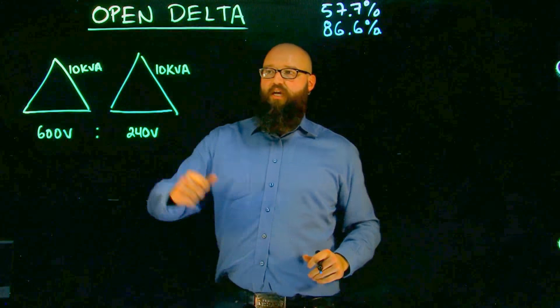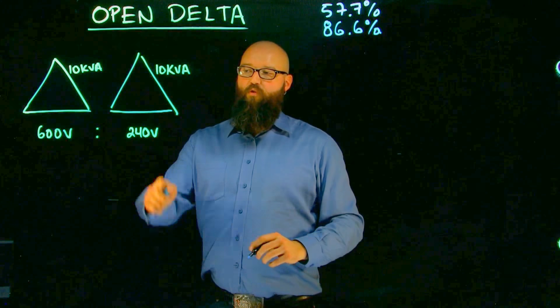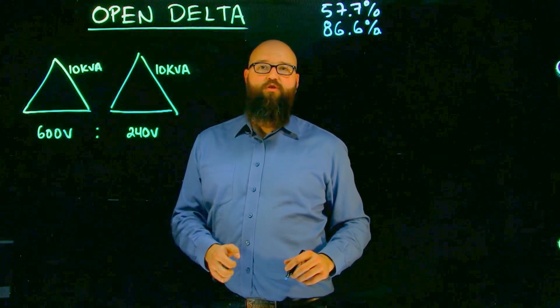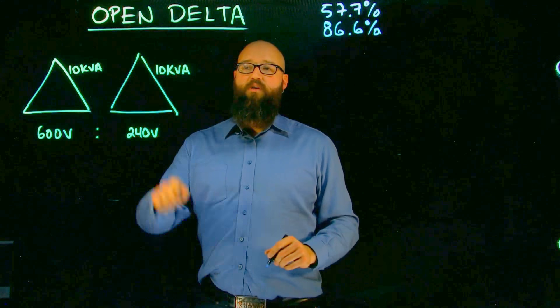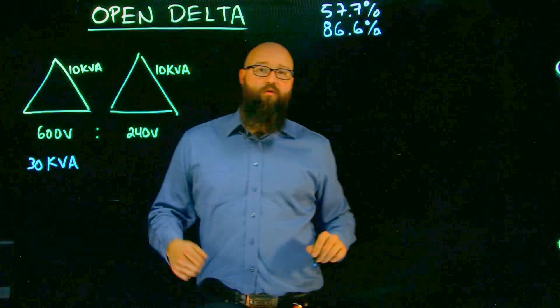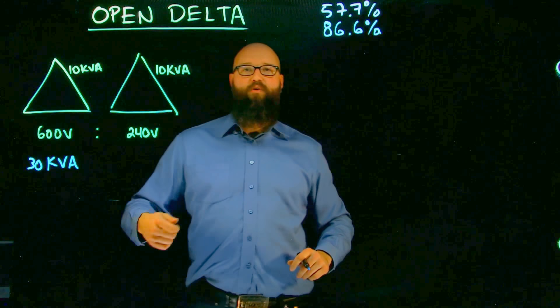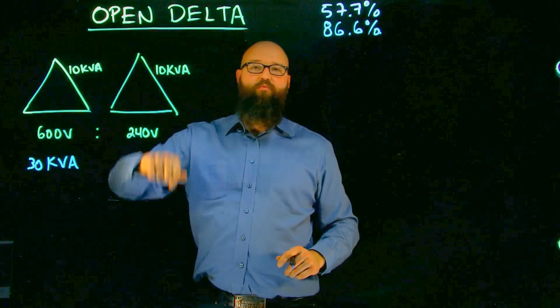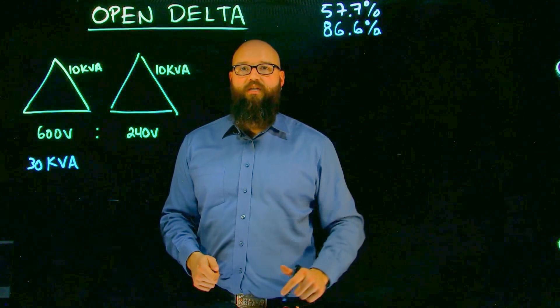So first of all let's look at the secondary. We know that we have a 240 volt, this is a 600 step down to 240 volt delta system. It's a 30 kVA transformer which means it has 30 kVA of output, rated output when all three of our phases or our transformers are connected.